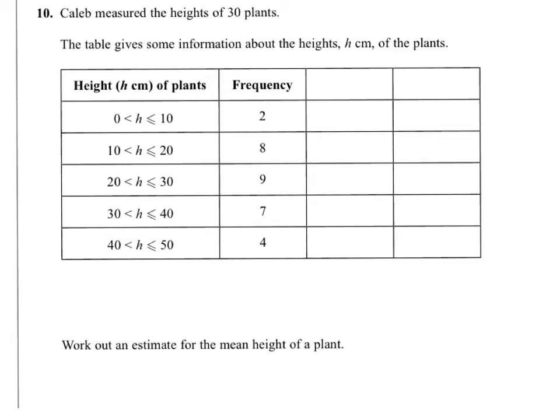So Caleb measured the heights of 30 plants. The table gives us some information about the heights, h cm, of the plants. We know that 2 are between 0 and 10, including 10, 8 greater than 10 but less than 20, and so on. So we're asked to work out an estimate for the mean height of a plant from this frequency table.